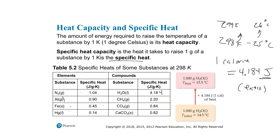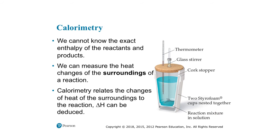Specific heat plays a role in calorimetry. If you have a reaction taking place in water and track water's temperature, you can figure out something about the reaction. We can't know the exact enthalpy of reactants and products, but we can monitor the temperature of a water bath before and after a chemical reaction occurs in the cup. We get our delta T to see how the temperature of the solution changes and relate that to whatever reaction took place in the cup.